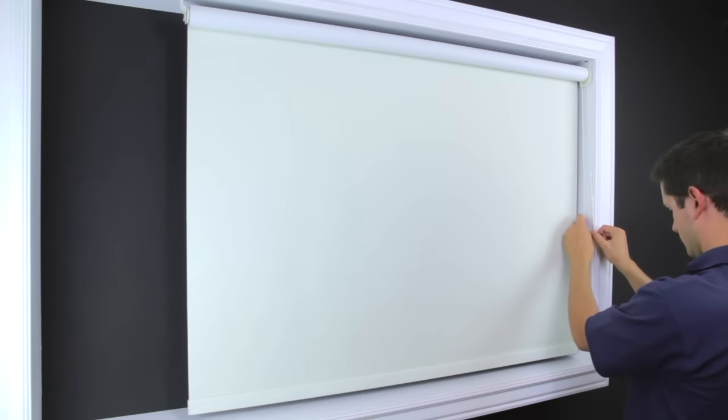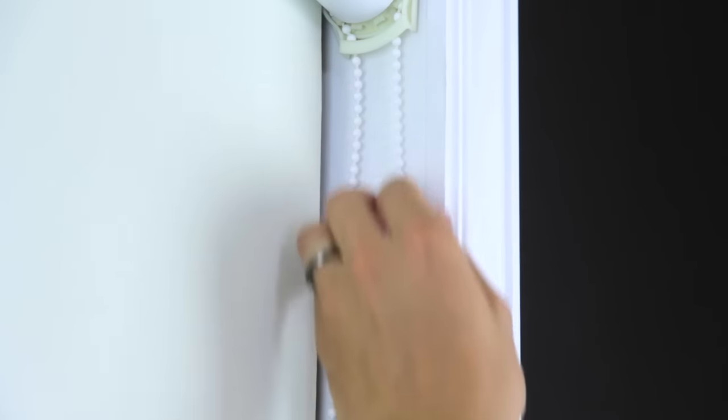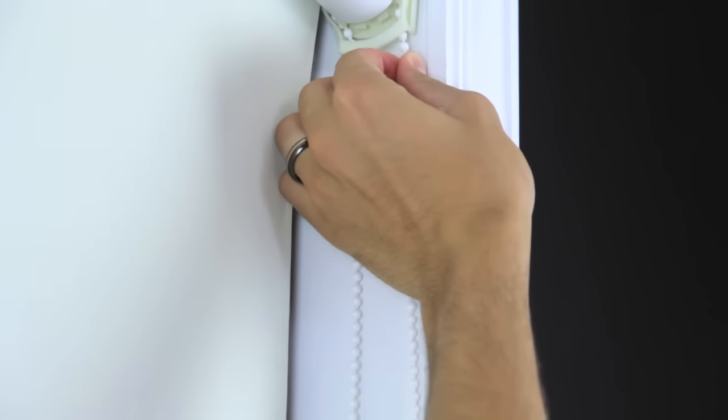Pull the shade down and repeat for the down position. Make sure to leave the shade slightly off the windowsill to prevent the fabric from buckling.